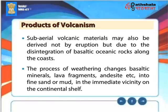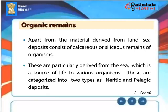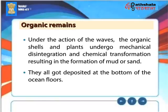The process of weathering changes basaltic minerals, lava fragments, and andesite into fine sand or mud in the immediate vicinity on the continental shelf. Apart from material derived from land, sea deposits consist of calcareous or siliceous remains of organisms, particularly derived from the sea. These are categorized into two types: neritic and pelagic deposits. Under the action of waves, the organic shells and plants undergo mechanical disintegration and chemical transformation, resulting in the formation of mud or sand, which are deposited at the bottom of the ocean floors.